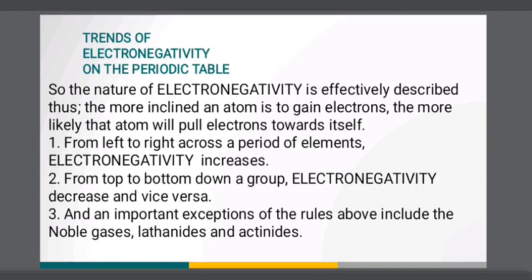So the nature of electronegativity is effectively described thus: the more inclined an atom is to gain electrons, the more likely that atom will pull electrons towards itself. From left to right across a period of elements, electronegativity increases.